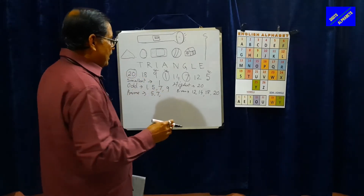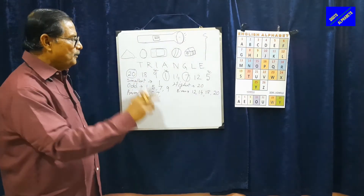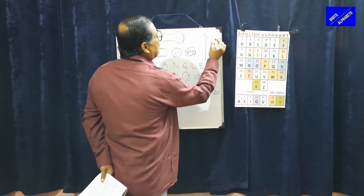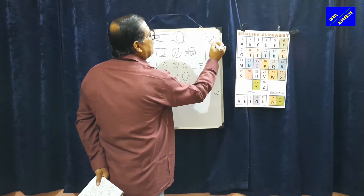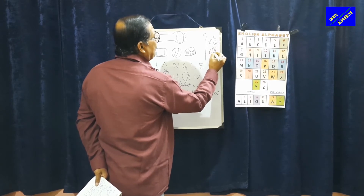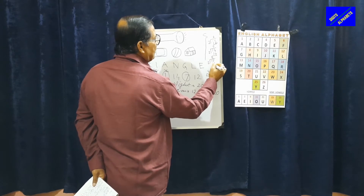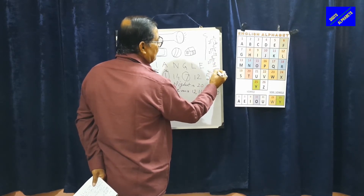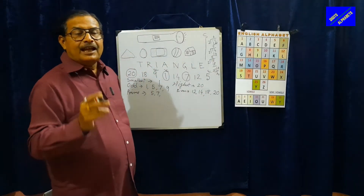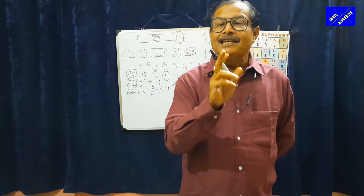Now, how many numbers can be divided by 2? We can say 12 can be divided by 2 — 2 sixes are 12. Then 14: 2 sevens are 14. Then 18: 2 nines are 18. Then 20: 2 tens are 20. In other words, these are the multiples in the table of 2.